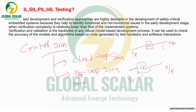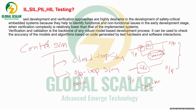In a closed loop system, feedback is present — with the help of feedback you can verify the data. Closed loop and open loop both come under system-level testing, but the scenarios differ. In the open loop, you expect the output from the input; in the closed loop, there is a feedback mechanism.